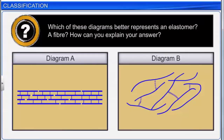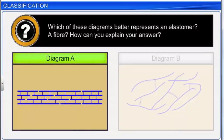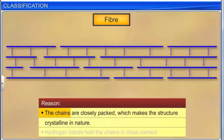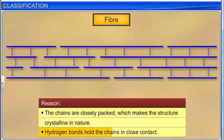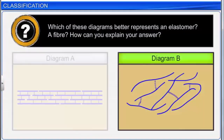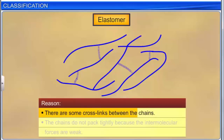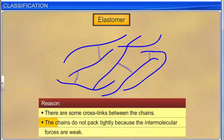Diagram A represents a fiber — the chains are closely packed, making the structure crystalline in nature, and hydrogen bonds hold the chains in close contact. Diagram B represents an elastomer — there are some cross-links between the chains, but the chains do not pack tightly because the intermolecular forces are weak.